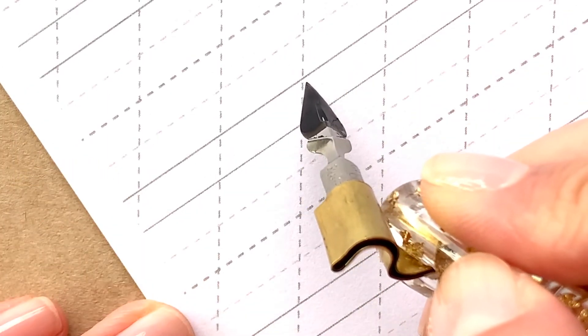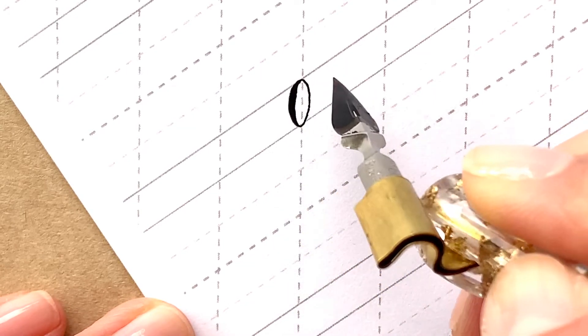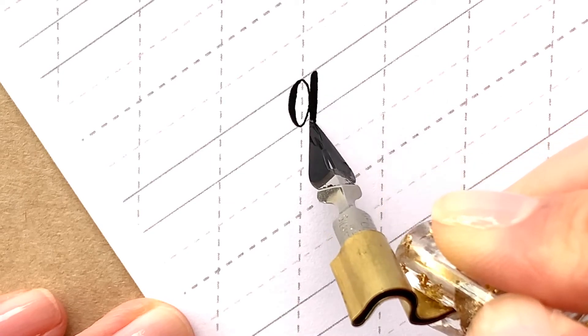Lowercase q. Draw an oval and then a descending loop with the loop on the other side, and finish with an exit stroke.